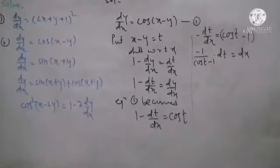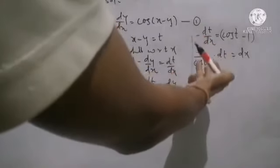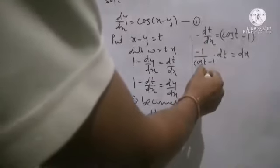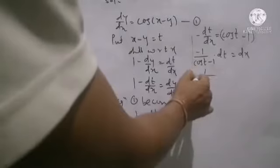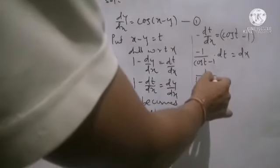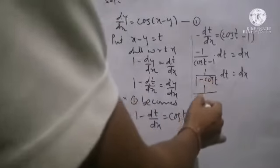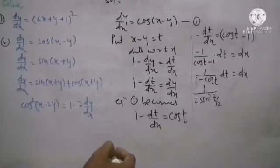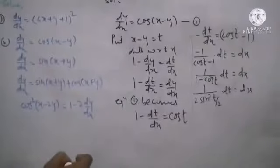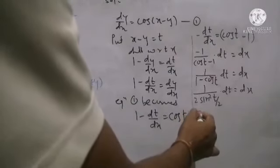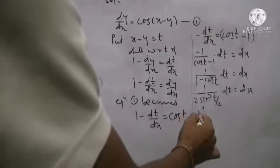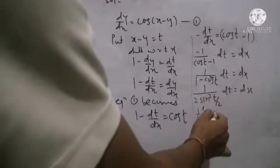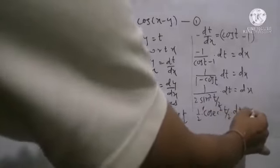Using the standard trigonometry formula, 1 minus cos t equals 2 times sine squared of half the angle, where the angle is t, so half of it is t by 2. Therefore 1 minus cos t is 2 sin squared t by 2 into dt. Now 1 upon sin is cosec, so 1 upon sin squared is cosec squared. The constant 2 is taken as one-half in denominator, giving one-half times cosec squared t by 2 into dt equals dx. We can now integrate as variables and operators are separated.